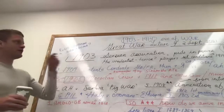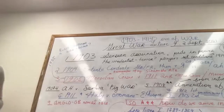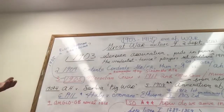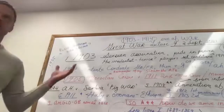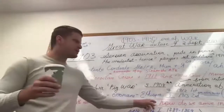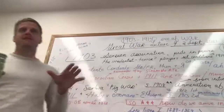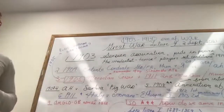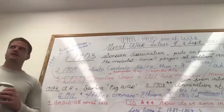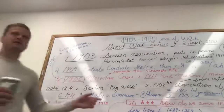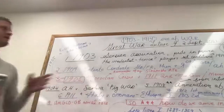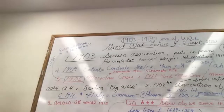Also massively important: the 1903 Serbian assassination. This puts in power irredentist terror players that set the conditions for 1914. We're not talking about Franz Ferdinand here — we're talking about the assassination of the Serbian king and queen, which happened in Serbia.